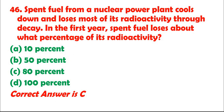Question 46: Spent fuel from a nuclear power plant cools down and loses most of its radioactivity through decay. In the first year, spent fuel loses about what percentage of its radioactivity? A. 10%. B. 50%. C. 80%. D. 100%. Correct answer is C.